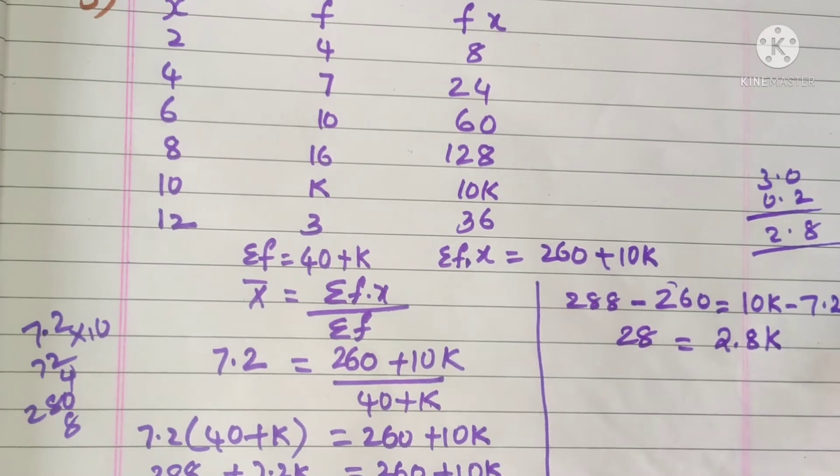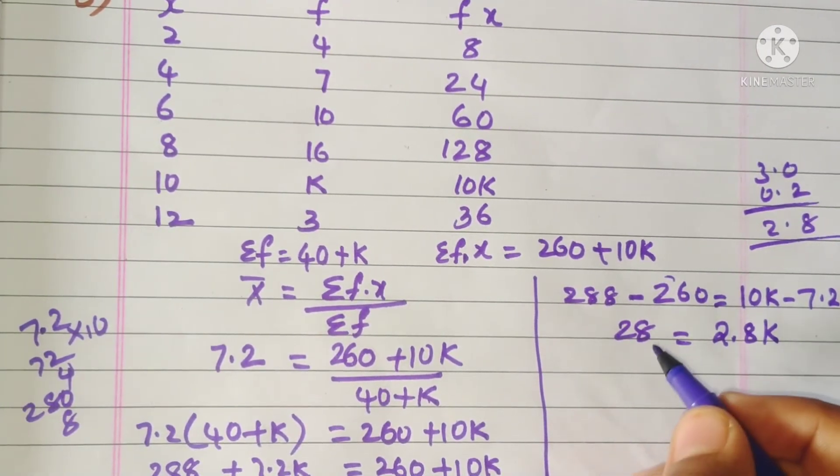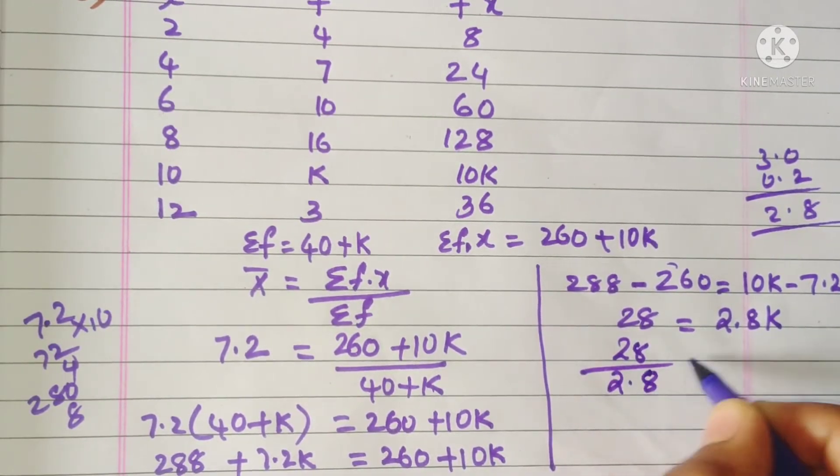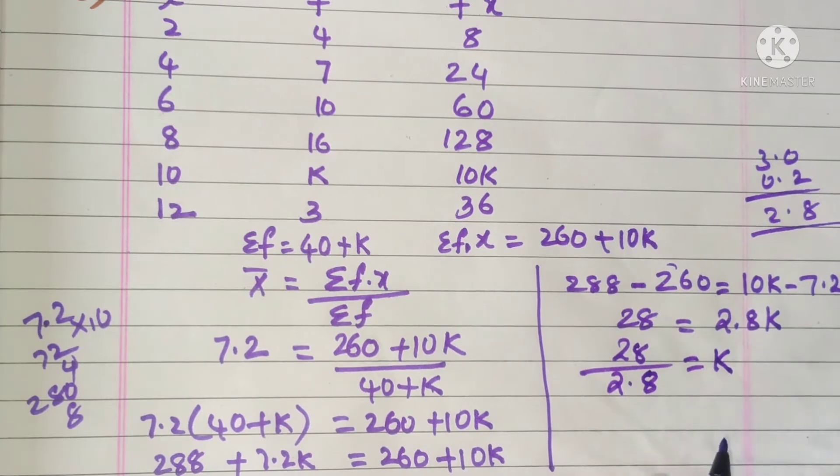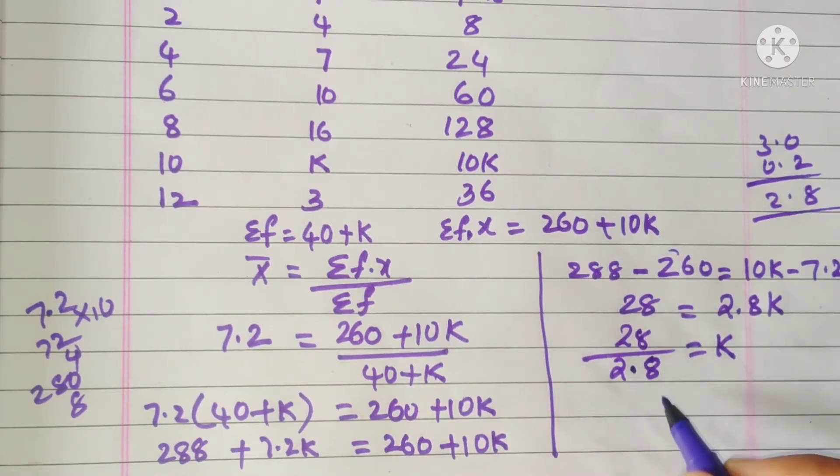Now if we transpose this 2.8 to this side, it comes under division. So 28 by 2.8 is equal to k. To remove this point, if we multiply with 10—after the point only one number is there—so multiply by 10.